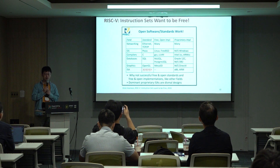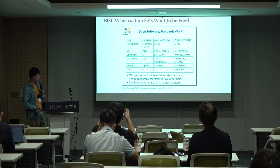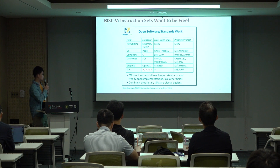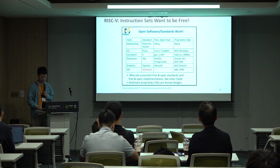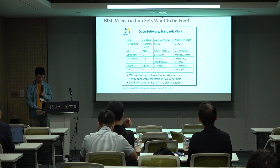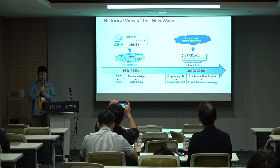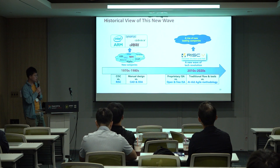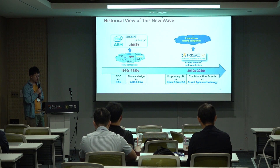Now we have RISC-V, initiated by UC Berkeley in 2012. Comparing RISC-V's ISA against other ISAs as an open standard, the rise of RISC-V is a new wave of the technology revolution.